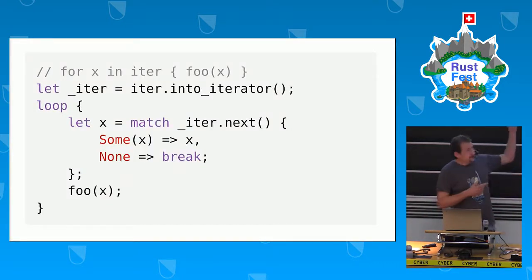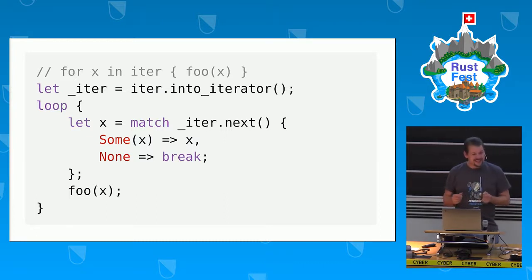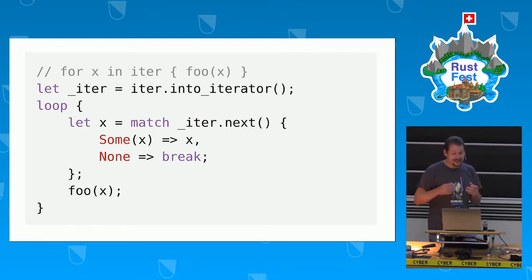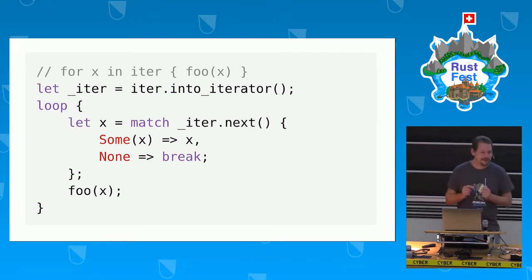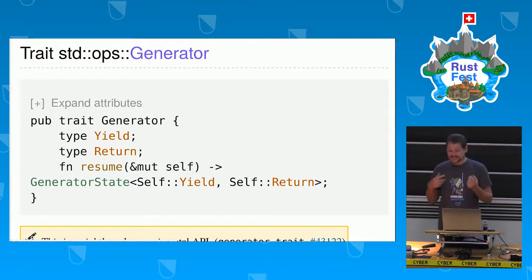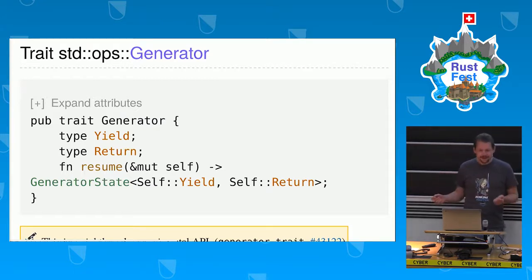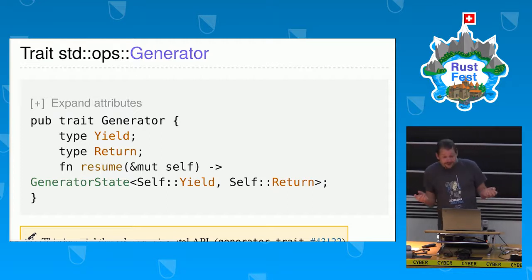When in Rust code you use a for, it will loop and each time ask for more. If it does get a None, iteration is done. Otherwise there's some value in store. Rust used to just iterate, but soon we too may generate. Yield a sequence of stuff, then resume. That's no bluff. Look out Python before it's too late.